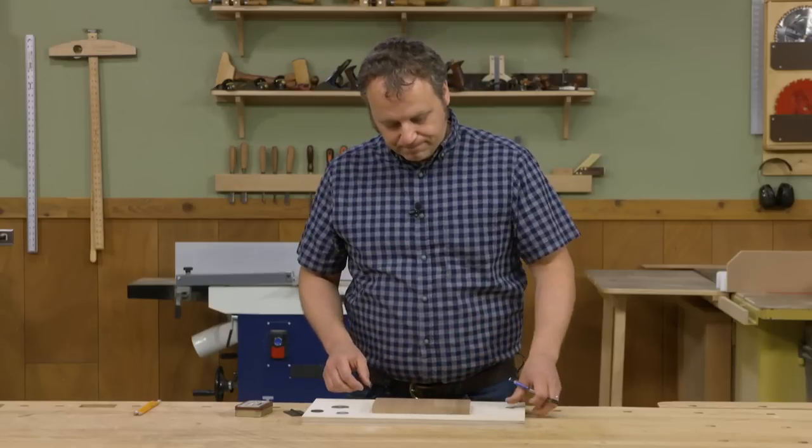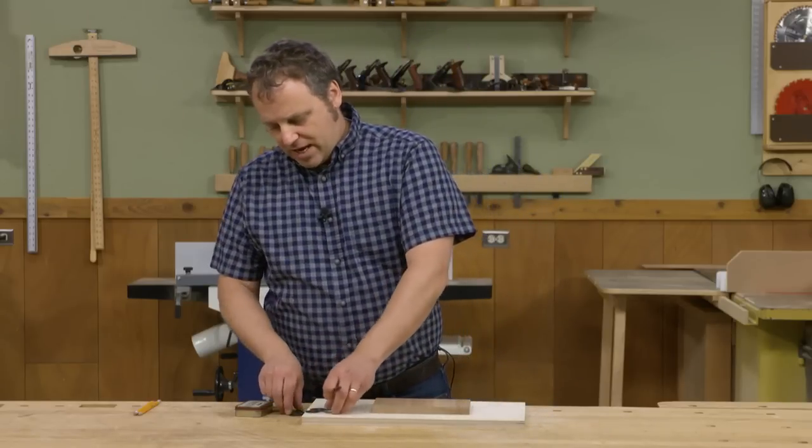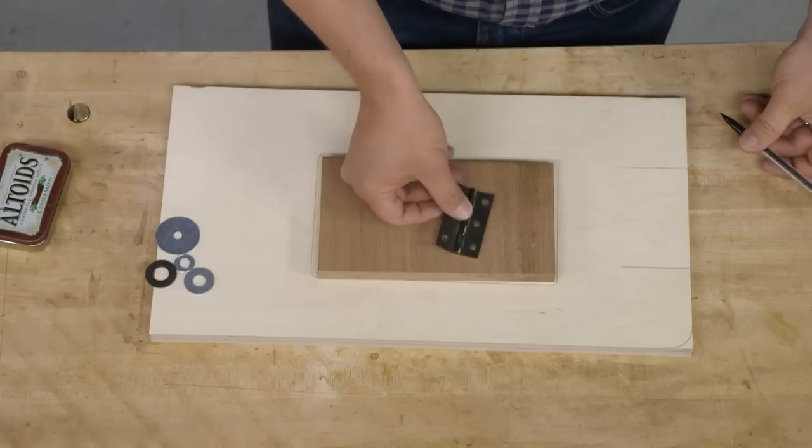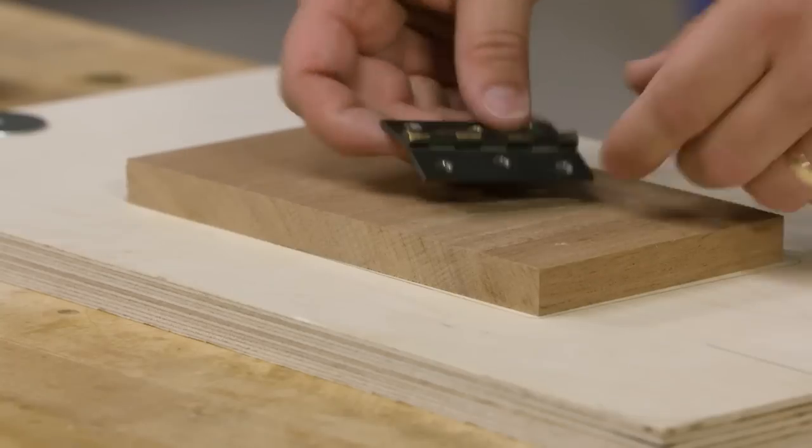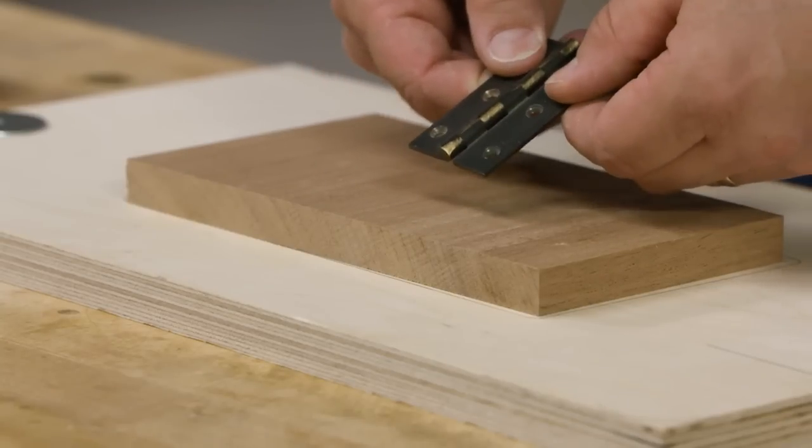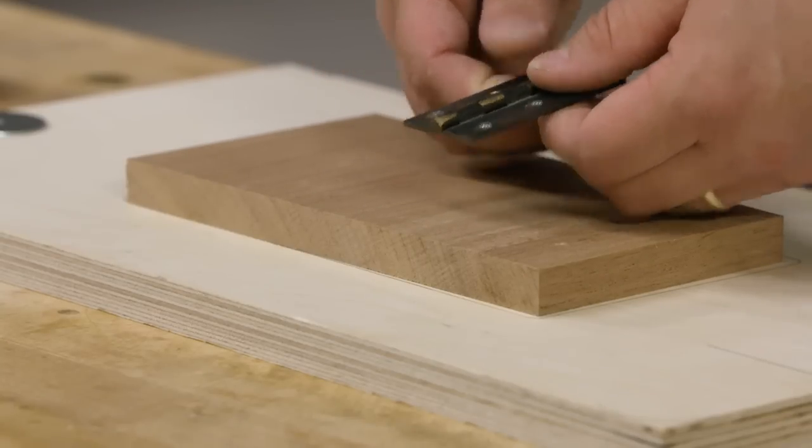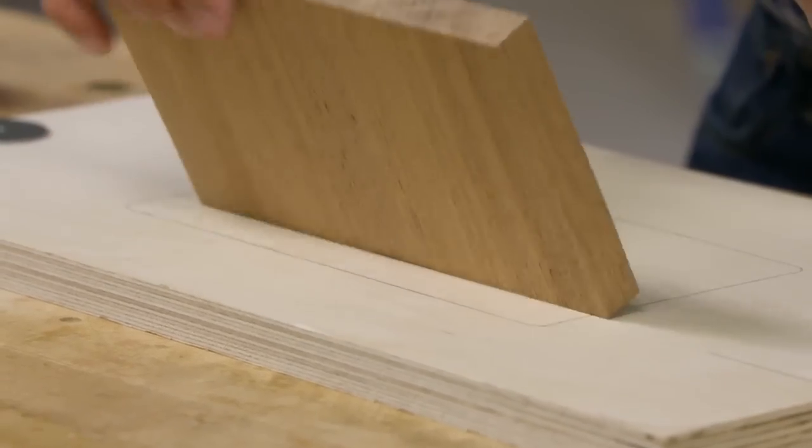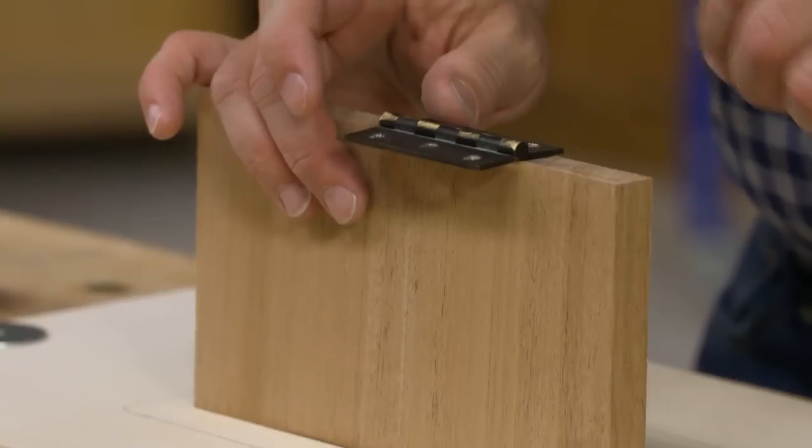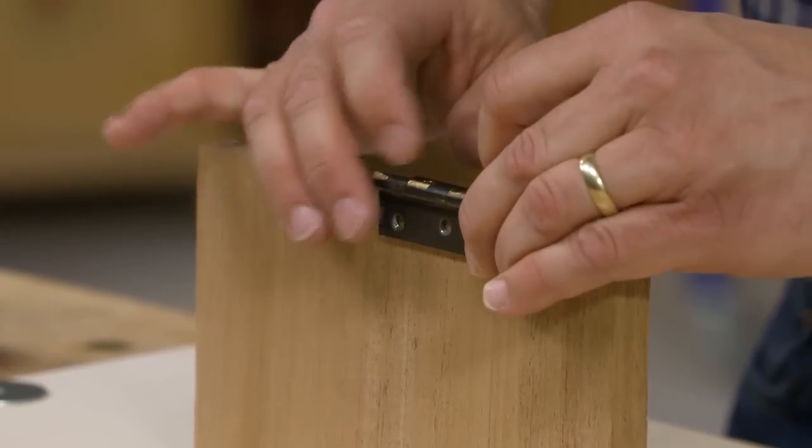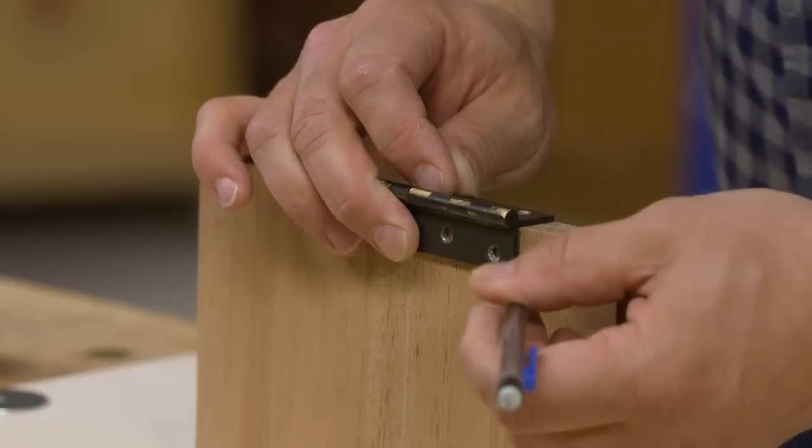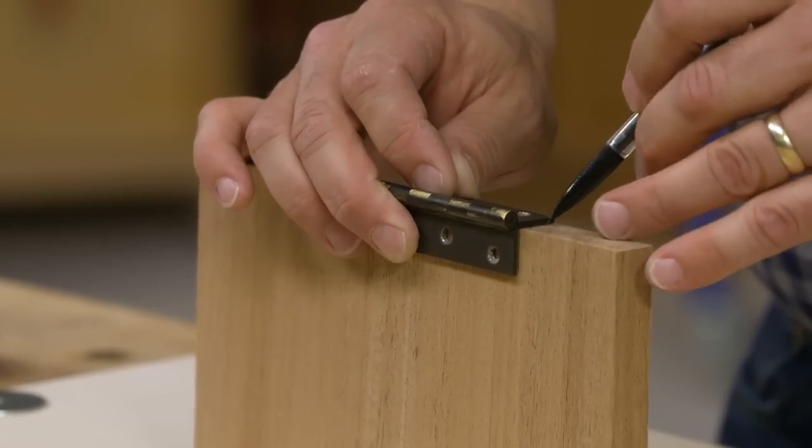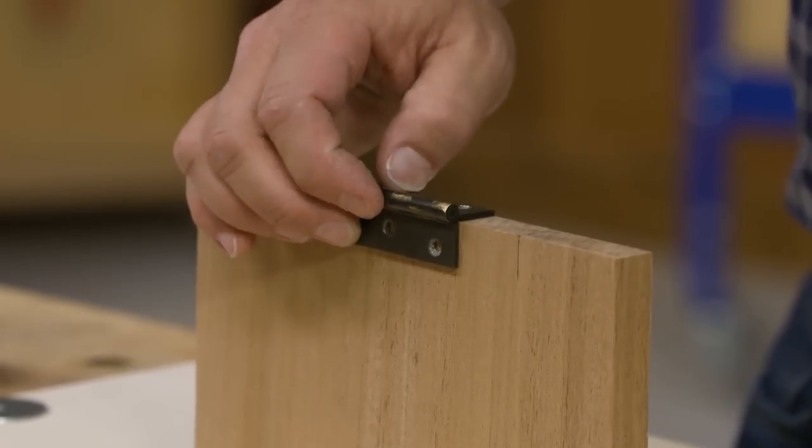Another found item you can use for layout is a hinge. I'm talking about a nice high-quality brass butt hinge with no play in the leaves. I use it as a saddle square. I can take the hinge, set it on a piece, fold it over, and now I can transfer and mark layout marks from one face to another, knowing those two marks are going to be perfectly aligned.